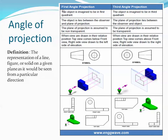We have four angles of projection: first, second, third, and fourth. However, we can only draw in first angle and third angle projection — not in second and fourth. Let me explain why. In first angle projection, the object is imagined to be in the first quadrant. In third angle projection, the object is imagined to be in the third quadrant.